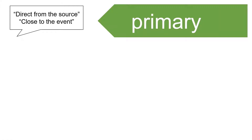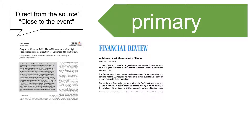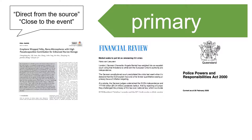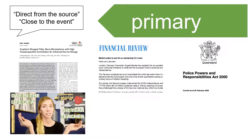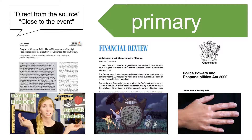Primary sources of information come directly from the source of that information. This includes journal articles or reports that describe original research, records of personal experiences like diaries or autobiography, and newspaper articles that report on the writer's own investigations or observations.